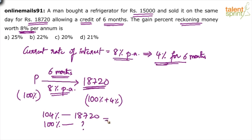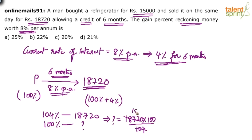When you do cross multiplication, you get 18,720 × 100 / 104. So 104 goes 180 times into 18,720 — 100 × 180 = 18,000, and 4 × 180 = 720, so 180 × 104 = 18,720. This means the principal is 18,000.